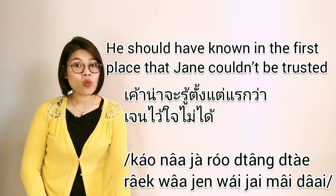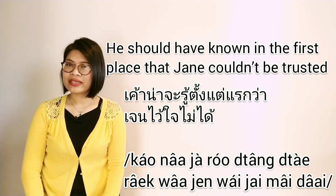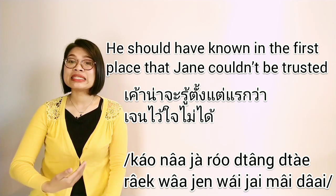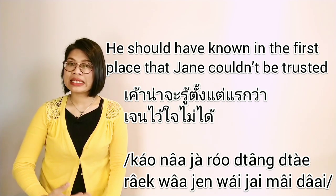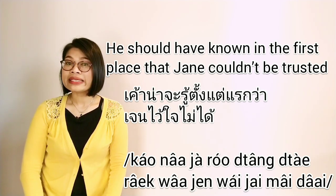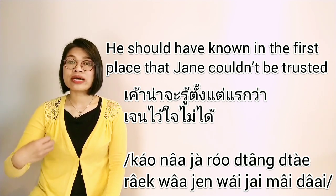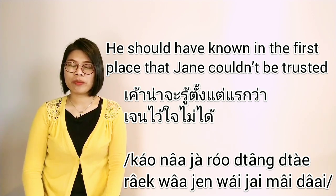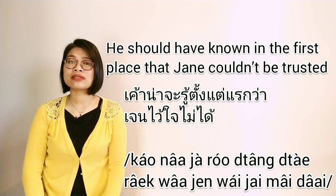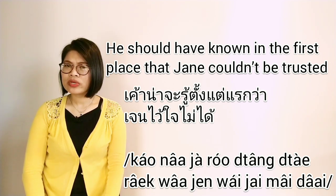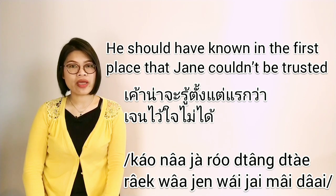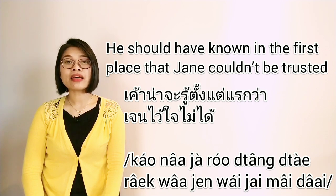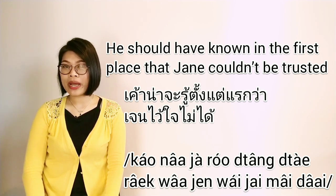เขาน่าจะรู้ตั้งแต่แรก ว่า — and then 'Jane couldn't be trusted': เจนไว้ใจไม่ได้. ไว้ใจ means 'trust,' and ไม่ได้ at the end of the verb means 'cannot/couldn't.' So ไว้ใจไม่ได้ is 'couldn't be trusted.' The full sentence: เขาน่าจะรู้ตั้งแต่แรกว่าเจนไว้ใจไม่ได้.